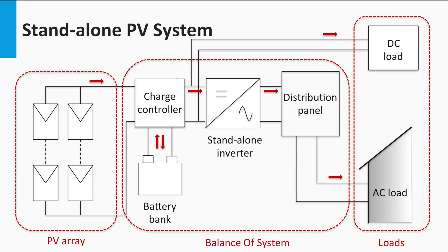Here a typical off-grid or stand-alone PV system is shown. Consequently, the inverter is a stand-alone inverter. In this case, the PV system is stand-alone. The load can only depend on the PV system for power. So, the inverter that supplies AC power to the load has to appear as a voltage source with a stable voltage and frequency, supplying power at 230V AC or 110V AC, or as is the voltage standard at the location.